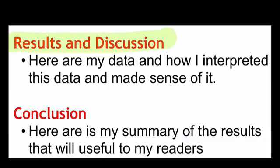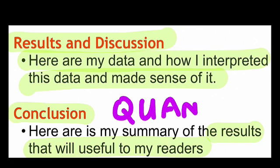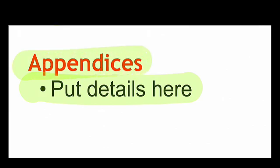In results and discussion, simply lay out for your reader: here's the data I got, here's how I interpreted it, here's some of my concerns, here's what I think it's telling me — give a really clear explanation. In conclusions, pull out the key results and findings and lay these out for your readers. An important thing here is quantification — give them numbers, give them percentages, tell them exactly what the conclusions are with numbers. And lastly, put details in appendices.